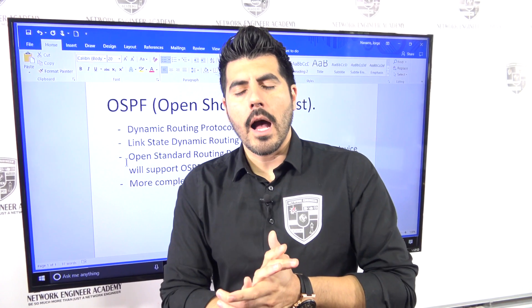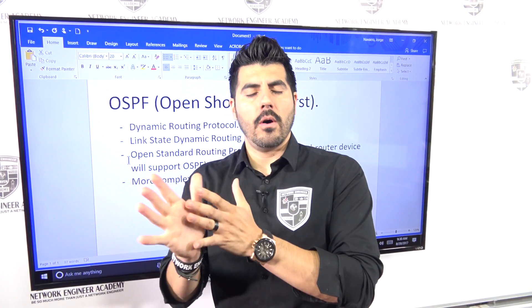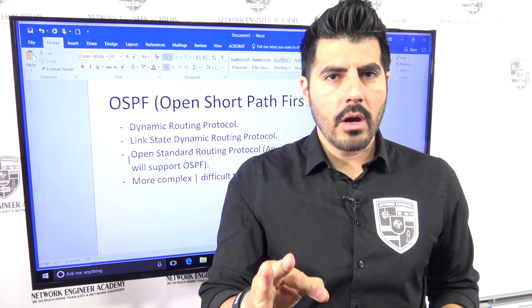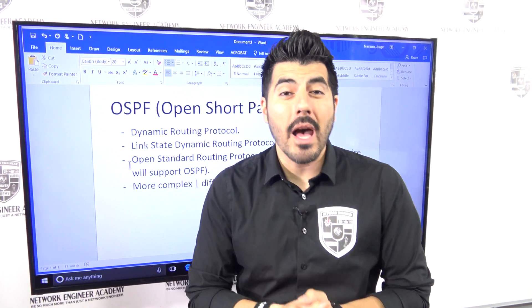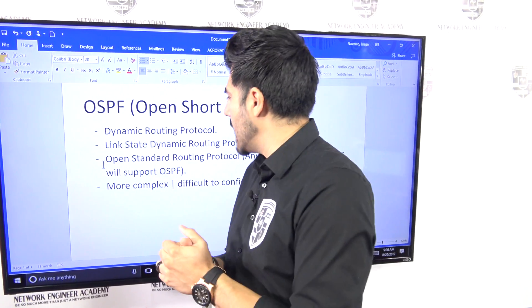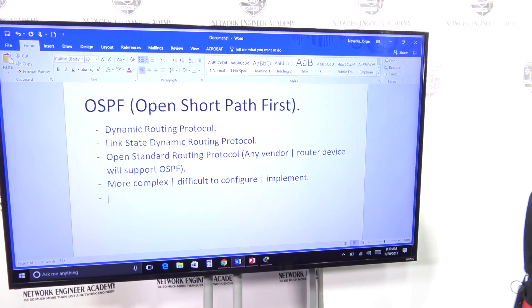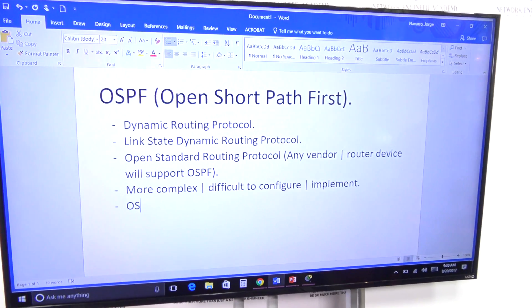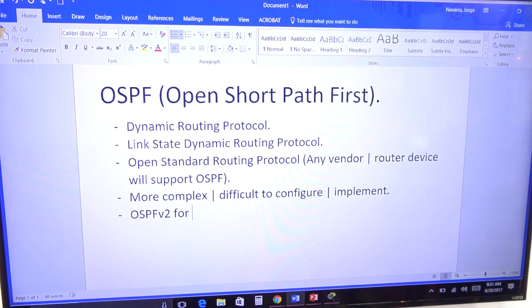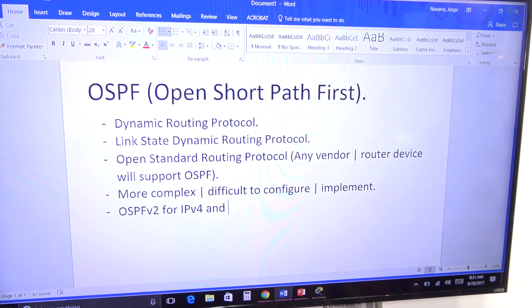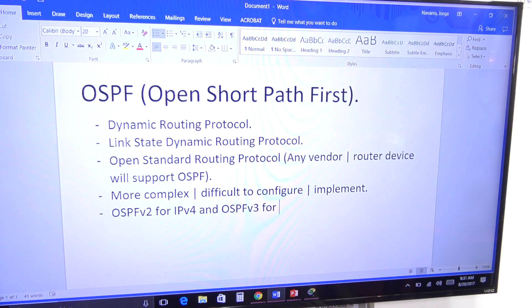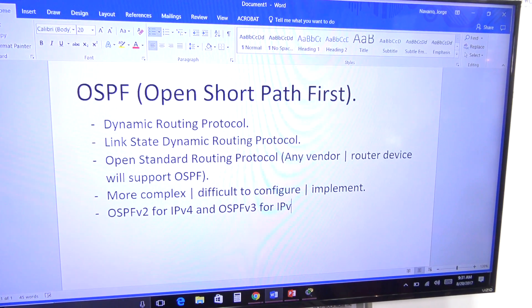We have two versions of OSPF. One for IP version 4 — the 32-bit IP address. And we have another one for IP version 6 — that 128-bit IP address. So: OSPF version 2 for IP version 4, and OSPF version 3 for IP version 6.